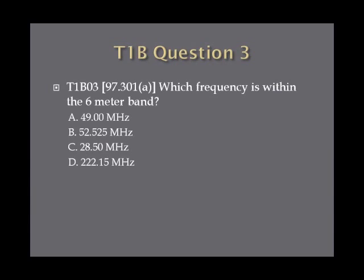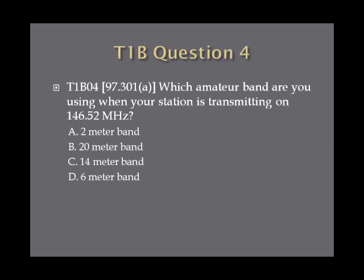Question 3. Which frequency is within the 6-meter band? A. 49 MHz. B. 52.525 MHz. C. 28.5 MHz. Or D. 222.15 MHz. Question 4. Which amateur band are you using when your station is transmitting on 146.52 MHz? A. 2-meter band. B. 20-meter band. C. 14-meter band. Or D. 6-meter band.